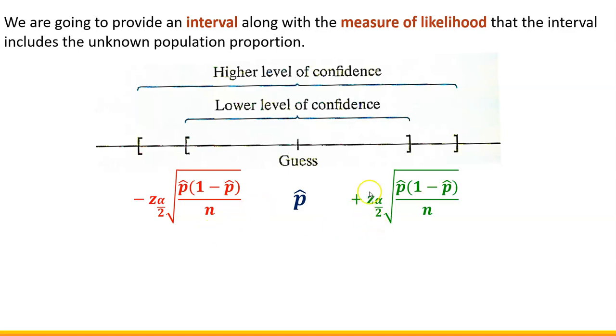So you should recognize z. It has some subscript next to it but we'll talk about that subscript later. But the fact that we have z involved means that we're going to be basing our calculations on the normal probability distribution, because we know the distribution of the sample proportion is approximately normal under certain conditions.